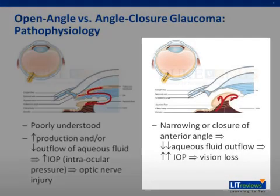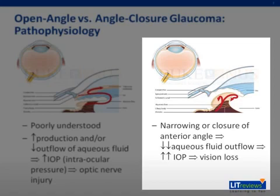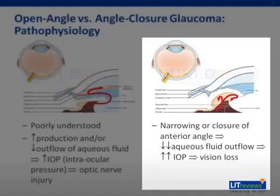Angle closure glaucoma results from narrowing or closure of the anterior chamber angle or iris root, with subsequent occlusion of the trabecular meshwork, obstruction of drainage of the aqueous fluid from the anterior chamber, and rapid elevation in the intraocular pressure. This also subsequently results in vision loss due to optic nerve injury.